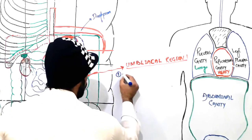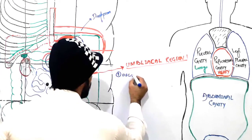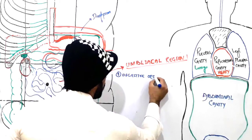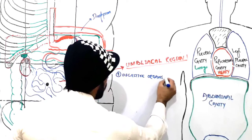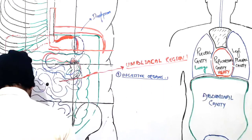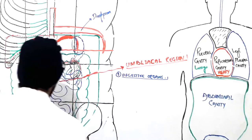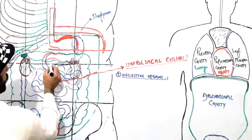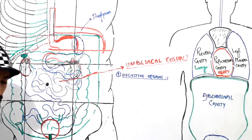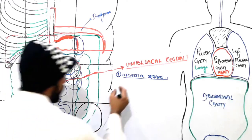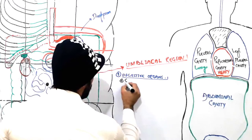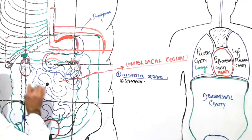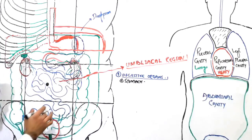The first group of organs found in the umbilical region are the digestive organs. The first digestive organ is the stomach — some part of our stomach comes down towards the umbilical region. Not all parts of the stomach are here; as I tell you in every lecture, not all parts of an organ are found in just one region.